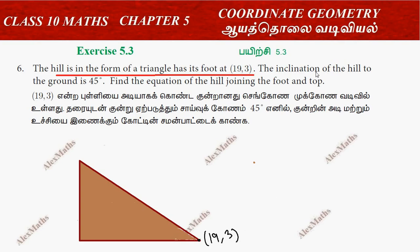The inclination of the hill to the ground is 45 degrees, so this angle is 45 degrees. We need to find the equation of the hill joining the foot and the top. This is point A, this is point B and C. The equation of AB — this is a slope, so slope of the hill.